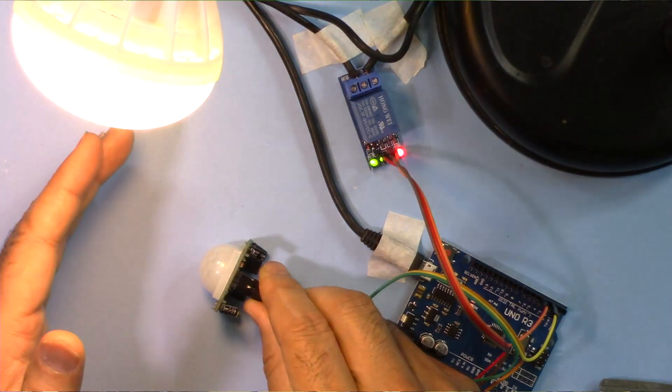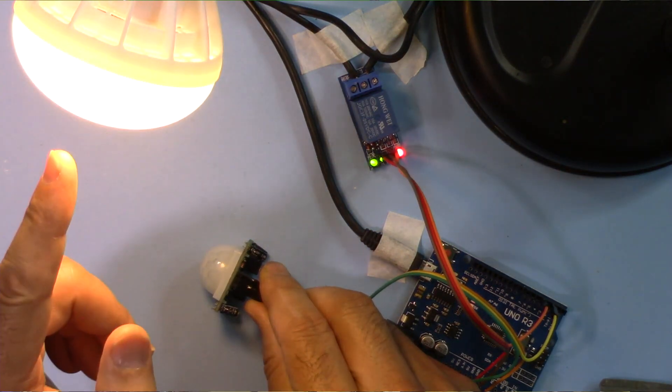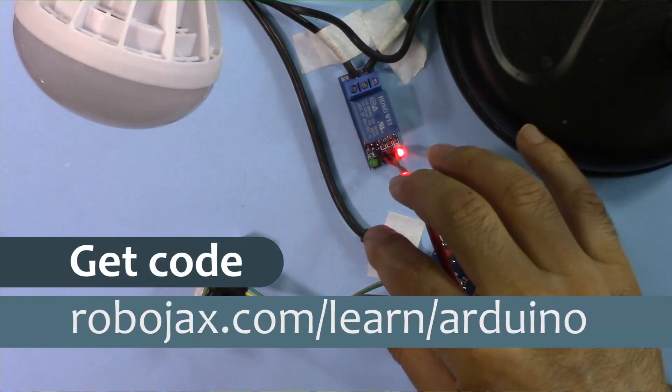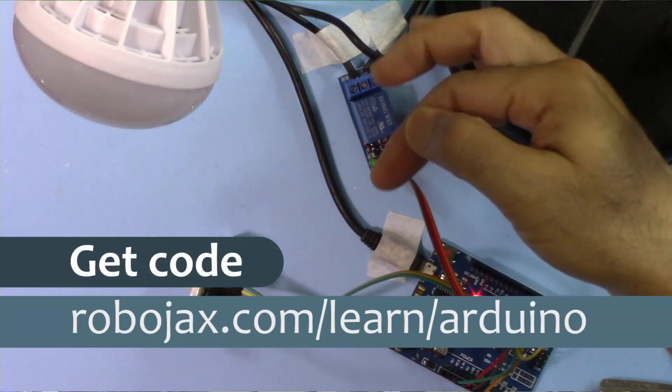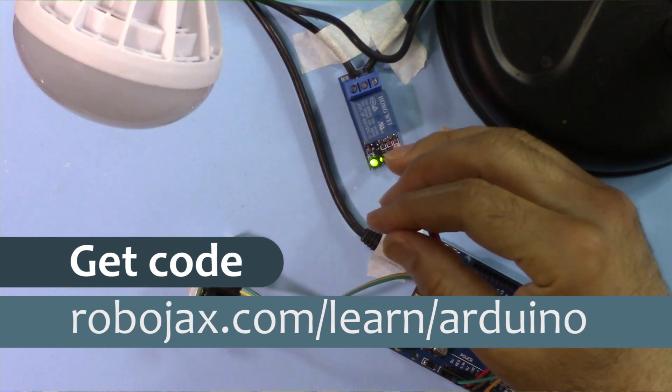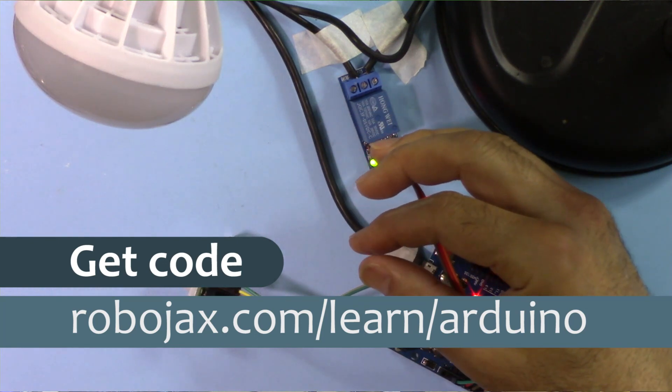Now there is no motion. If I bring my hand, it just detects it and turns on the light. You can get the code for this project by clicking on the link in the description below which will take you to robojax.com/learn/Arduino.